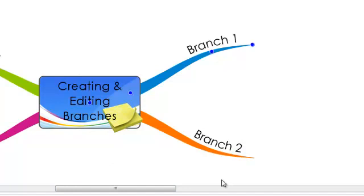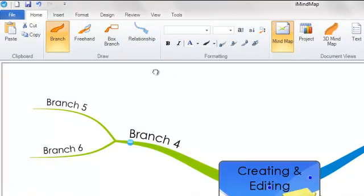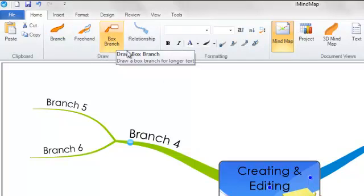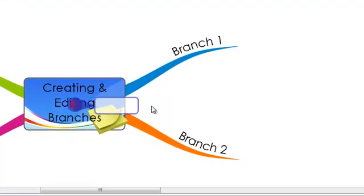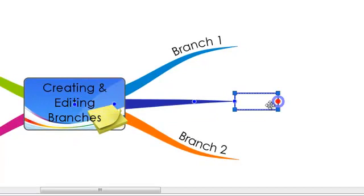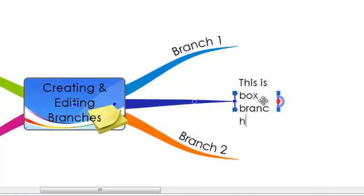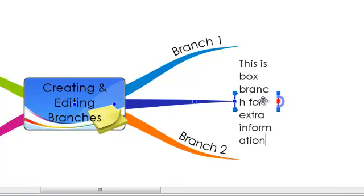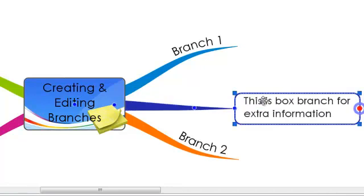If you would like to include more text on one of your branches, for example for a quote or an extract from a book, go to the top of the screen and under the home tab in the draw section, click on box branch. You can draw a box branch in the same way as any other branch by looking for the red dot and dragging out and releasing. You can see the box appear on the end of the branch here. This will allow you to fill it with more text than you would normally use on a normal branch. Simply double click in the box and then type your text. Click enter when you have finished and the box will wrap itself around your text.